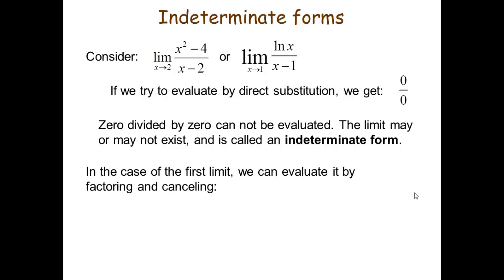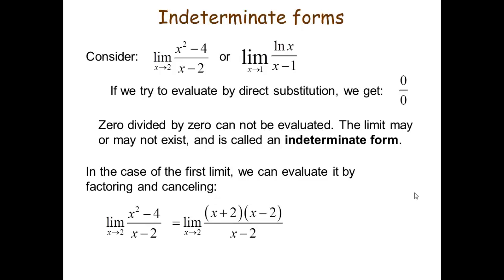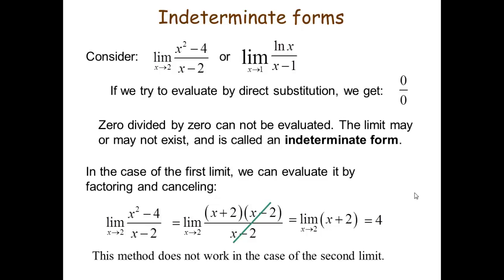So in the case of the first limit we will try to evaluate by factoring and canceling, because x² - 4 is (x + 2)(x - 2), which gets (x - 2) cancelled, and the limit x tends to 2 gives 4. This was the problem we solved by factorizing, but in the second case it is not possible because ln(x)/(x - 1) can't be factorized.